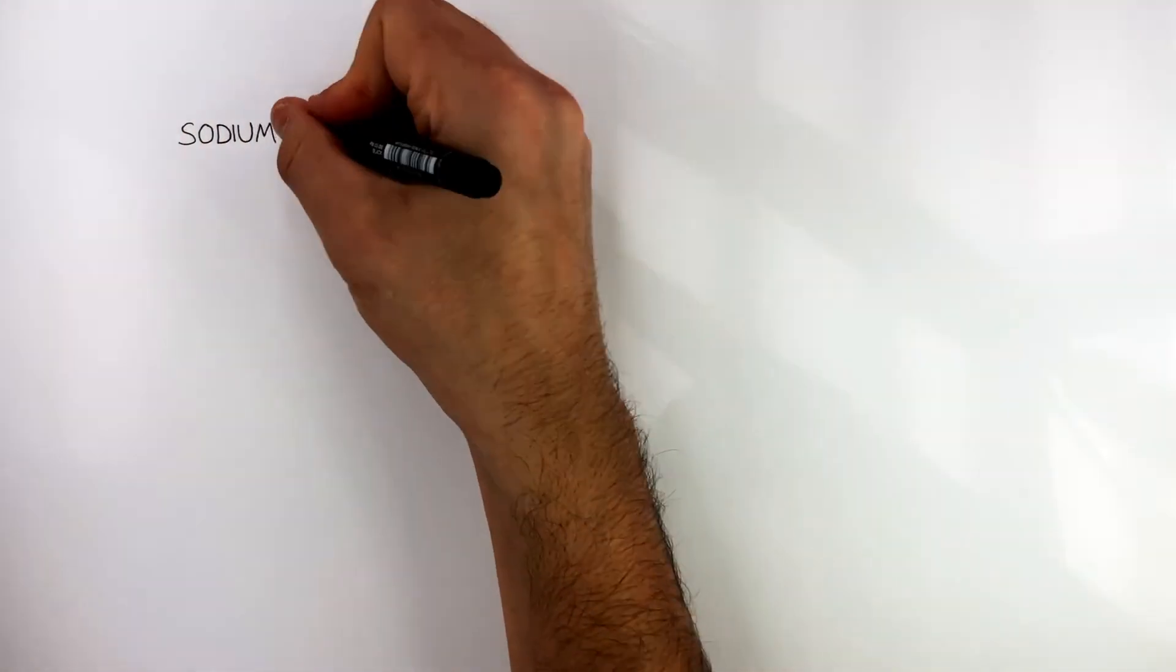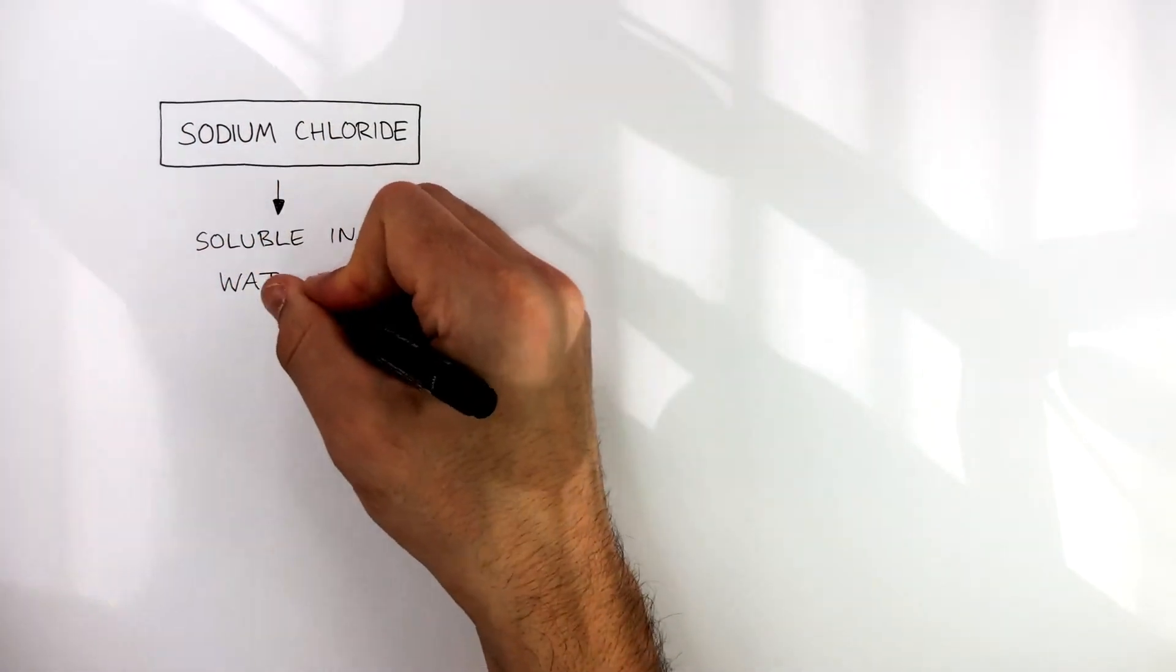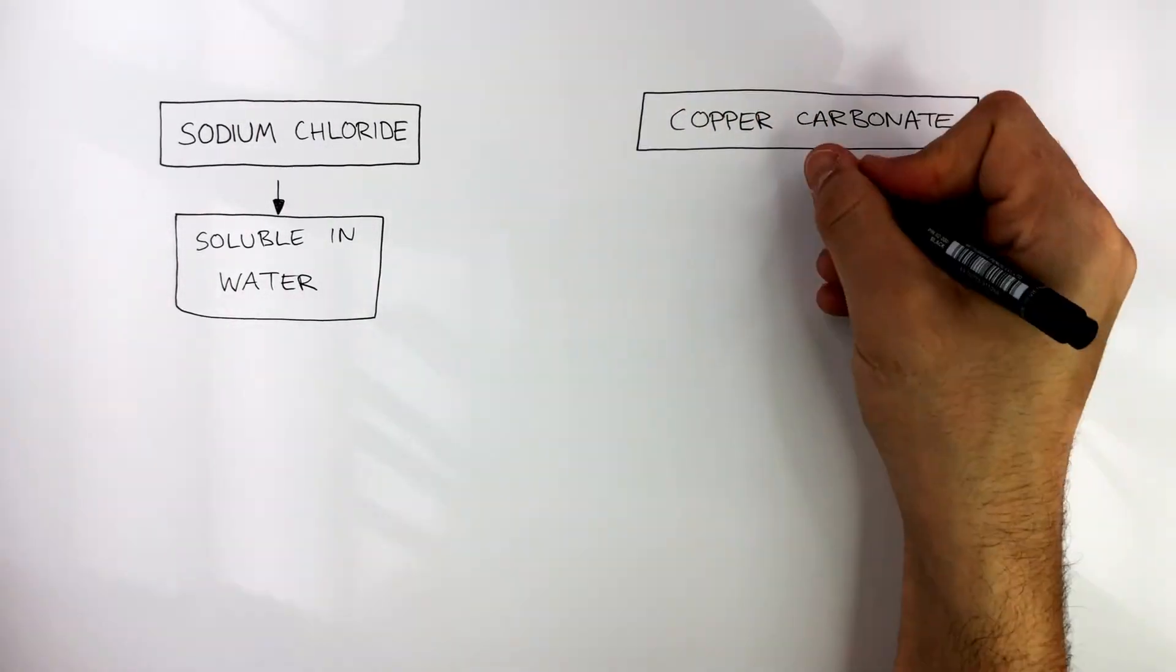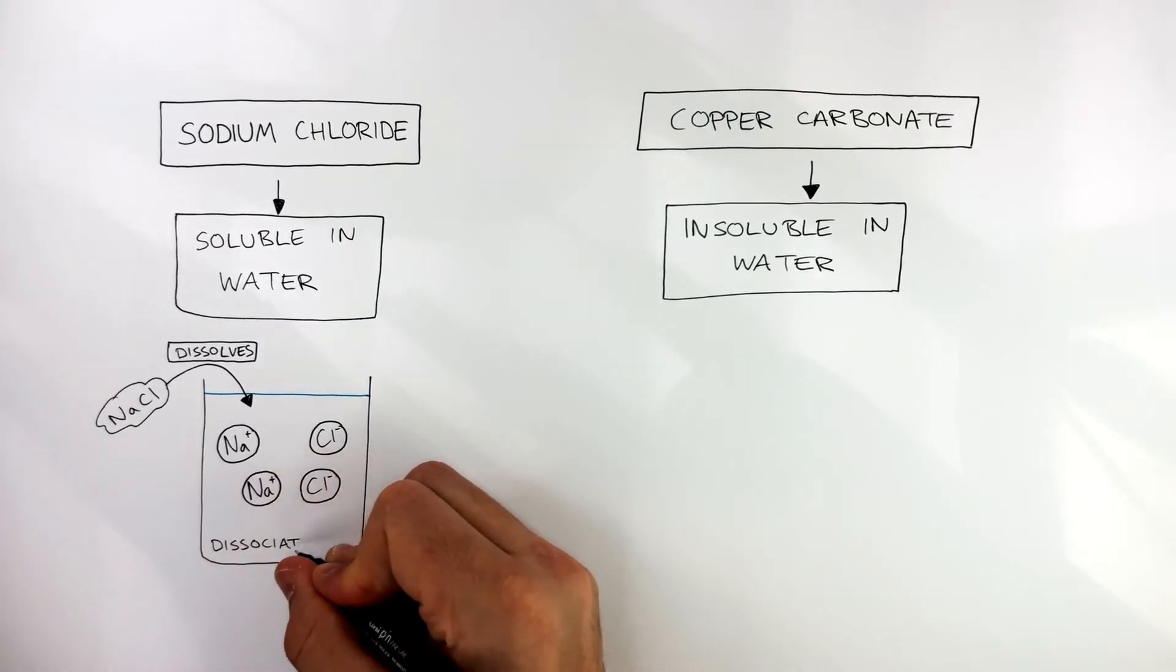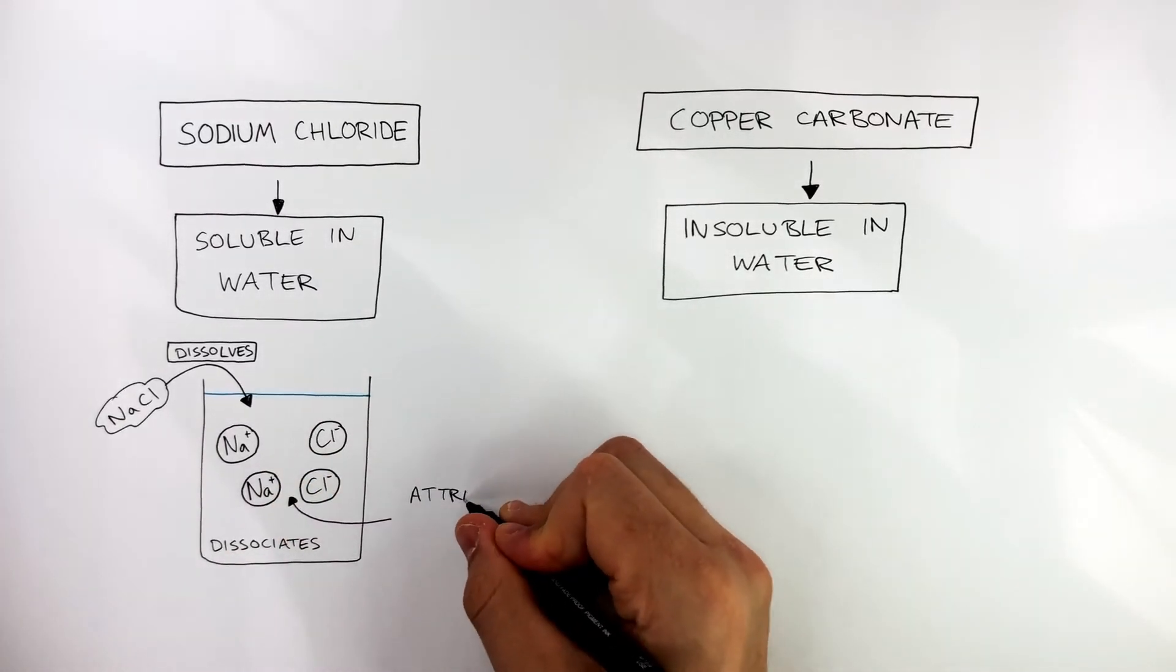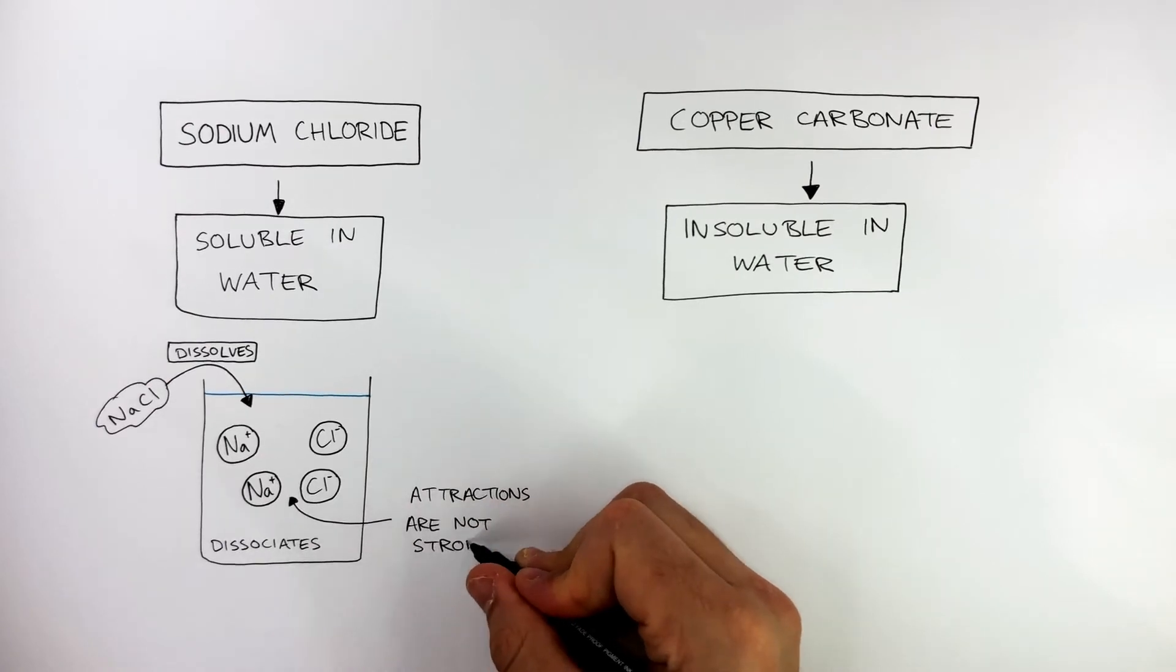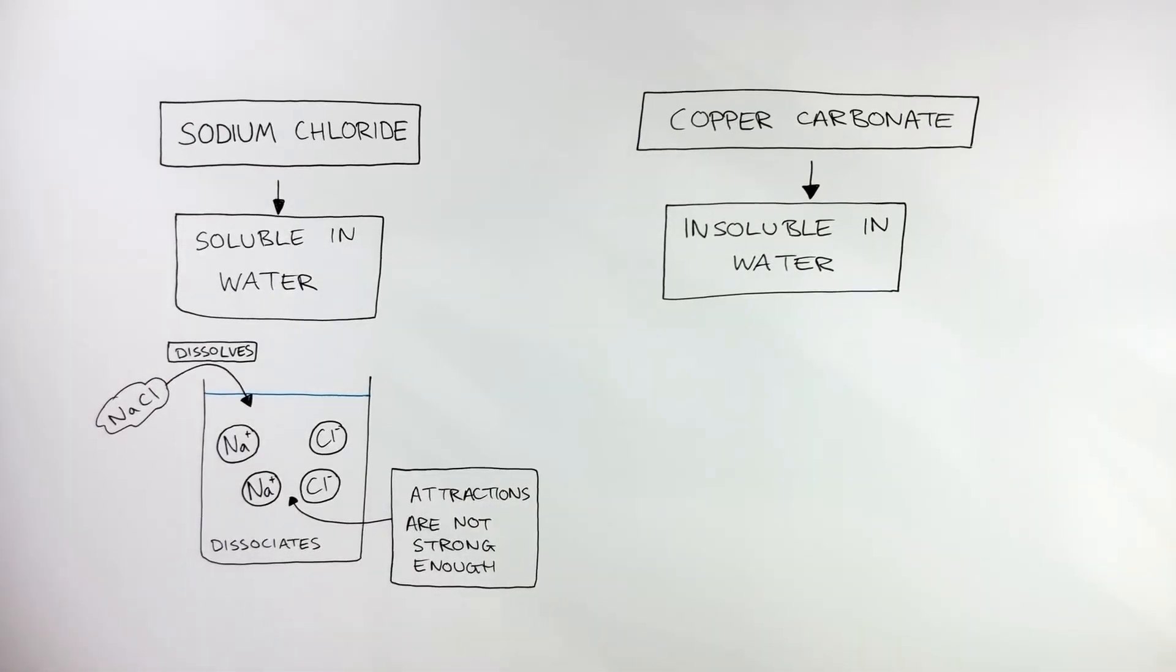We already know sodium chloride is soluble in water and copper carbonate is insoluble in water. But why? So what happens is, here's a beaker of water and the sodium chloride dissolves when it goes into the water. The sodium chloride dissociates into its ions. So the sodium chloride dissociates because the attractions between the ions are not strong enough to keep them together.